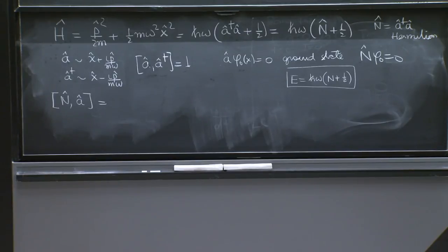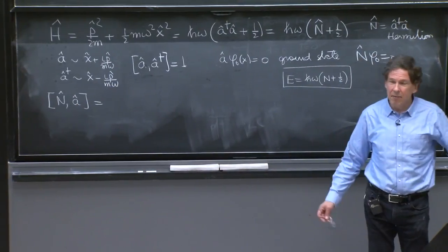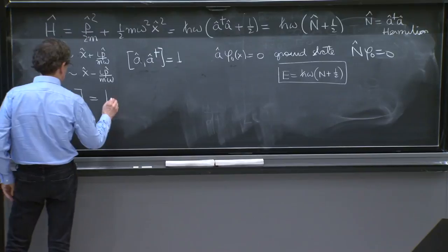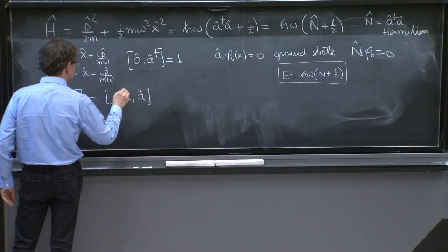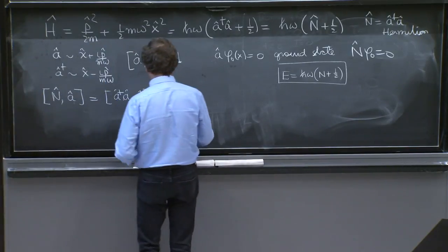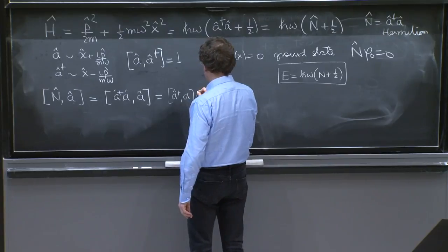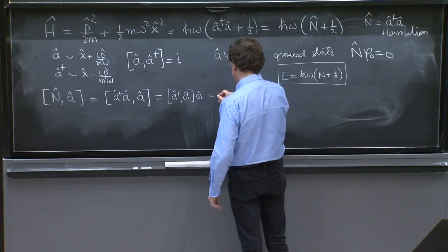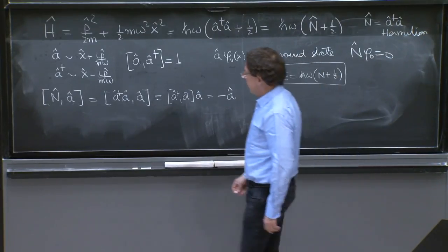And this commutator is going to show up, but it's basically the kind of thing. You have a and a dagger. You ask what is the commutator. If you have n, now you ask what is the commutator with the other thing? So n with a would be the commutator of a dagger a with a, like that. And sometimes I will not write the hats to write things more quickly. Now, in this commutator, you can move the a out, and you have a dagger a, a. And a with a dagger a is minus 1, because a with a dagger is 1. So this is minus a.